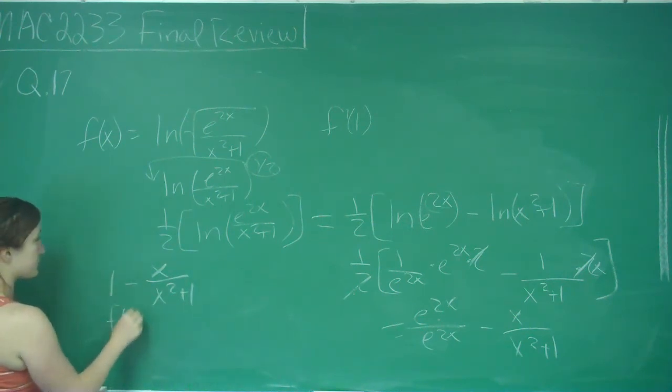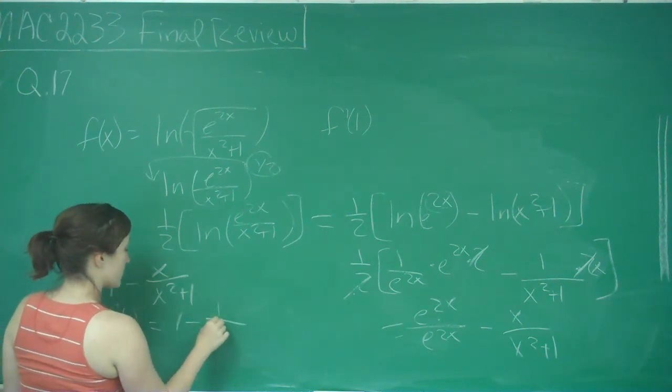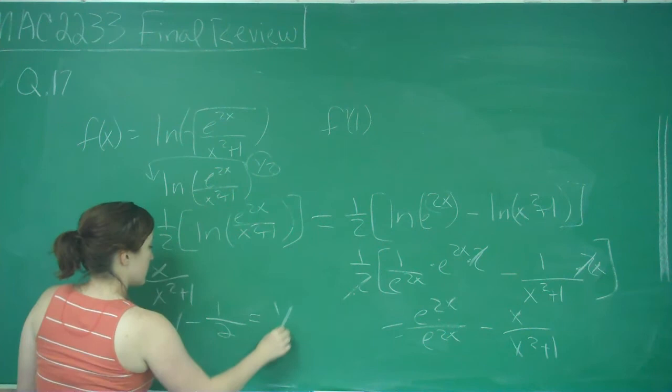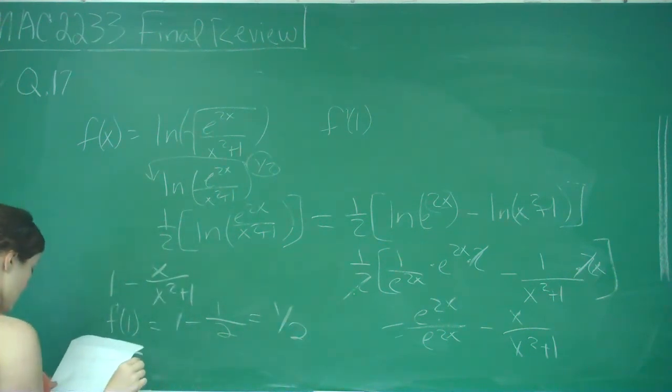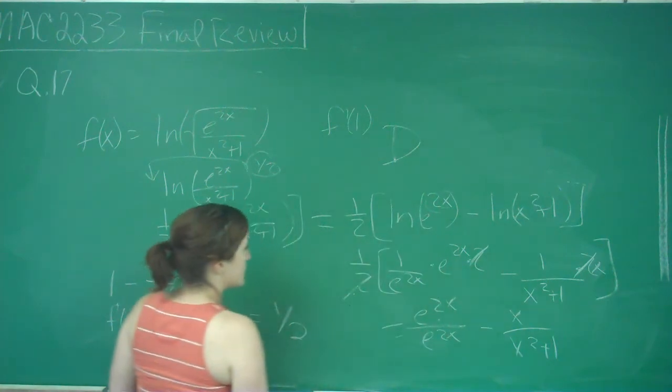And so f of 1, or f prime of 1, which is what this is, is 1 minus 1 over 1 plus 1, which is 1 half. So your answer is just positive 1 half, and it's choice D.